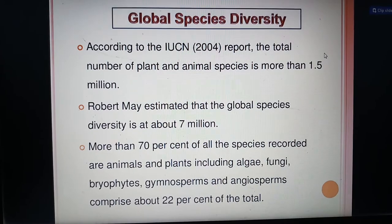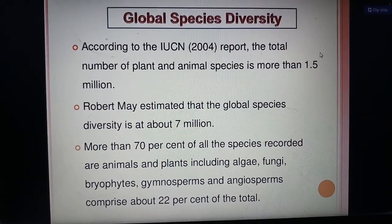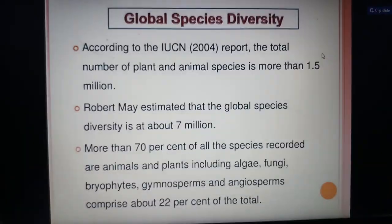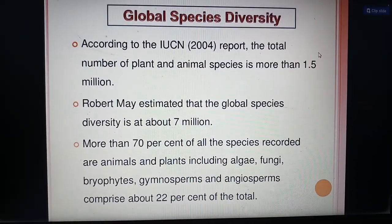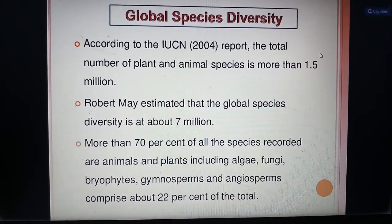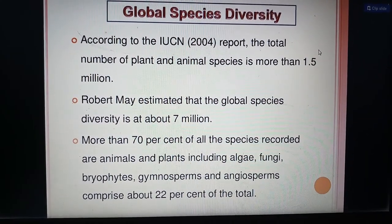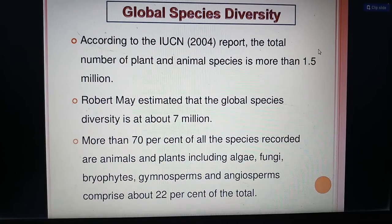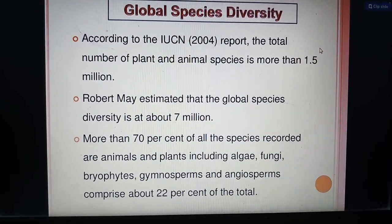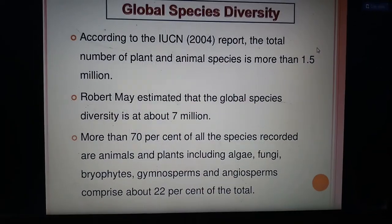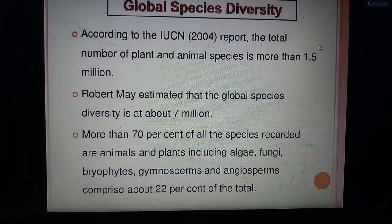Global species diversity: according to the IUCN 2004 report, the total number of plant and animal species is more than 1.5 million. Robert May estimated that global species diversity is about 7 million. More than 70% of all recorded species are animals. Plants, including algae, fungi, bryophytes, gymnosperms, and angiosperms, comprise about 22% of the total.